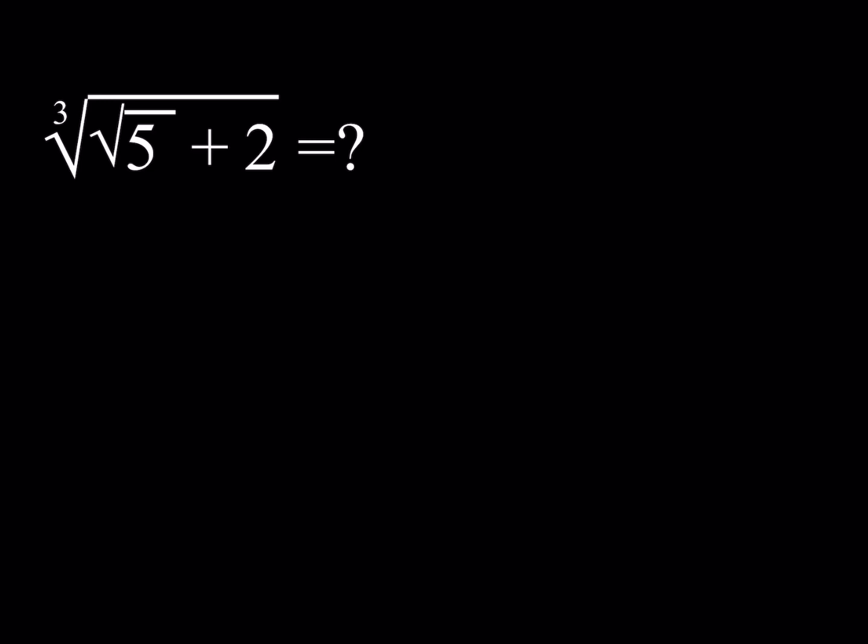We have the cube root of (√5 + 2), and we're going to simplify this. I'm going to be presenting two different methods — two different ways to simplify this. First method.